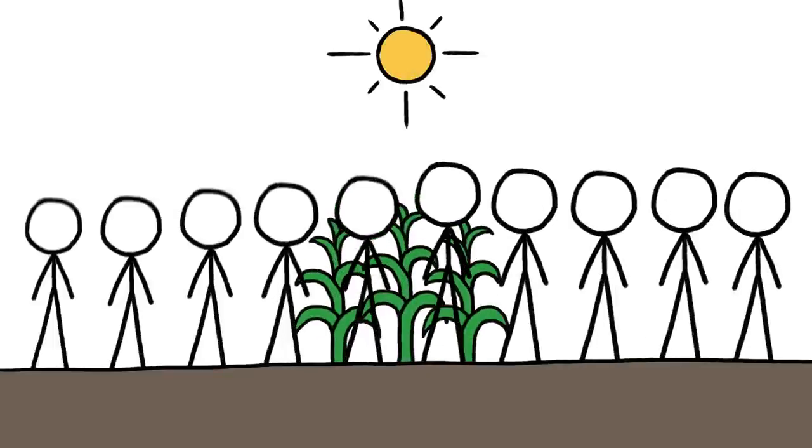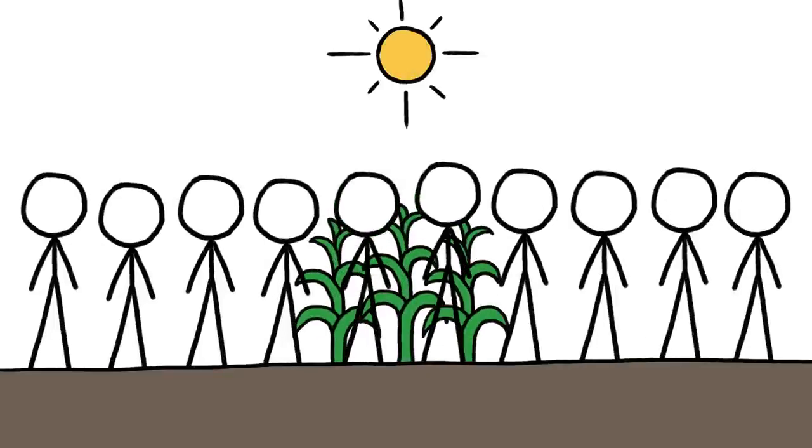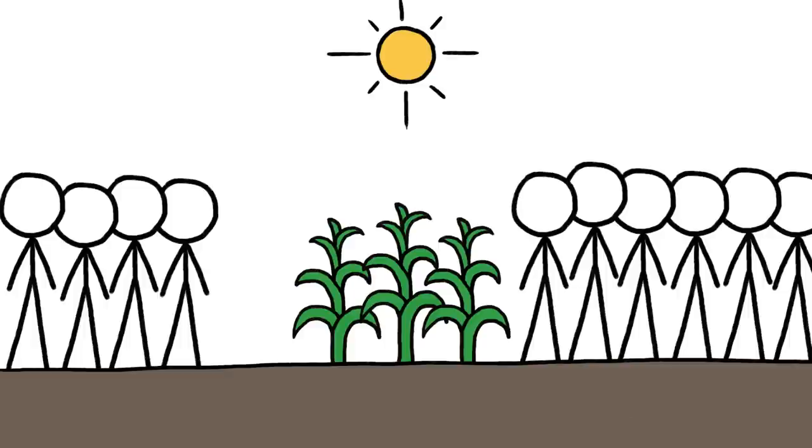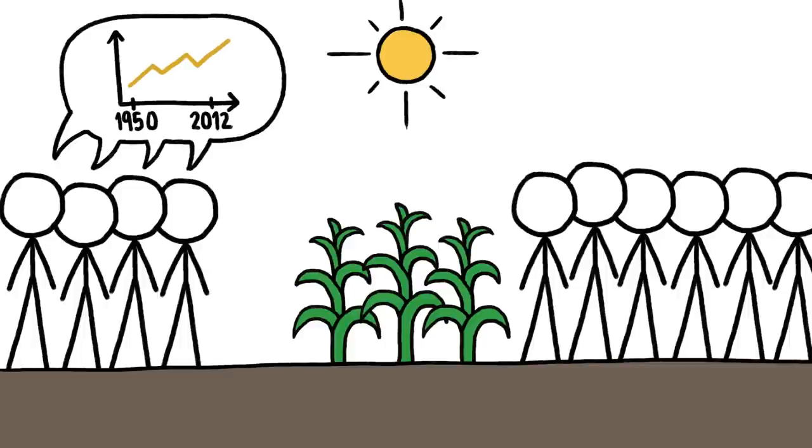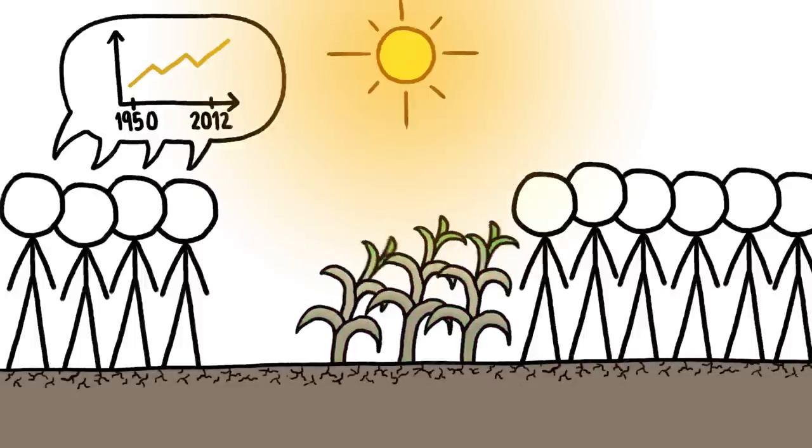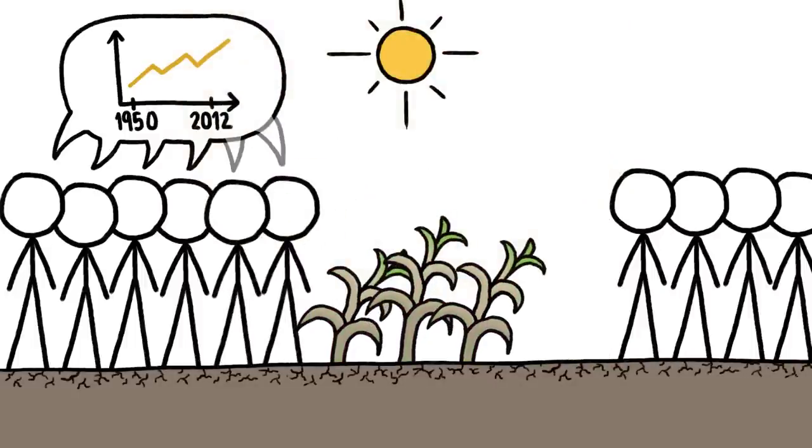And before a withering drought struck the American Midwest in 2012, only 41% of residents thought they detected a long-term uptick in the frequency and intensity of dry spells. But after that one desiccating summer, 66% said they've been seeing worsening droughts for decades.